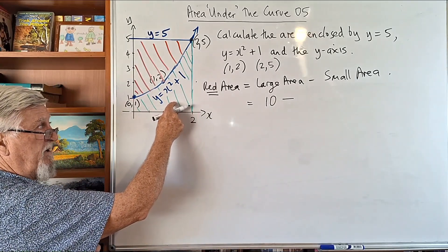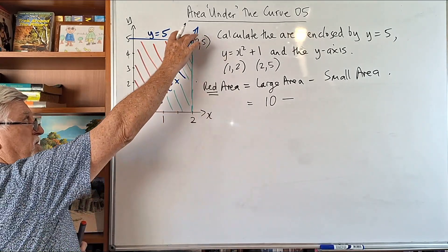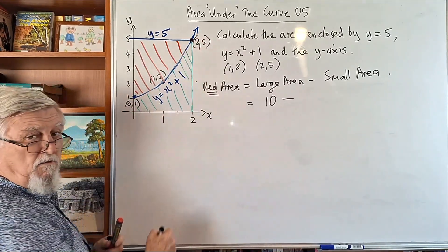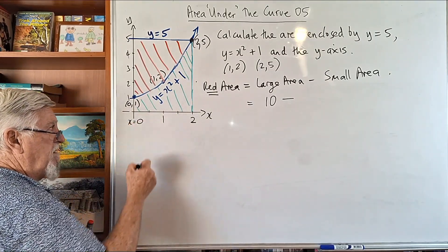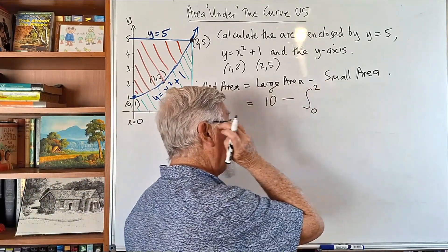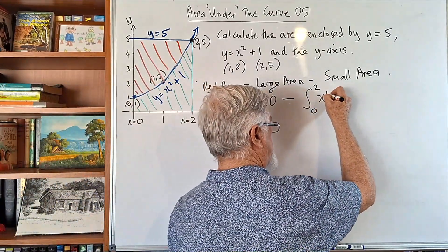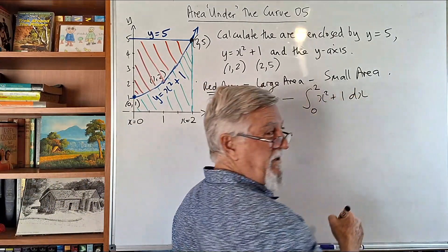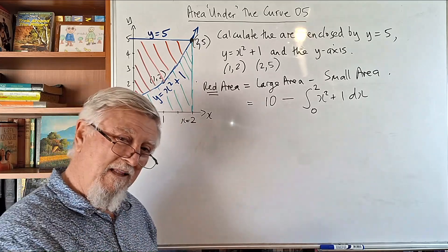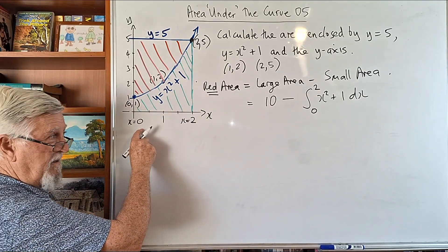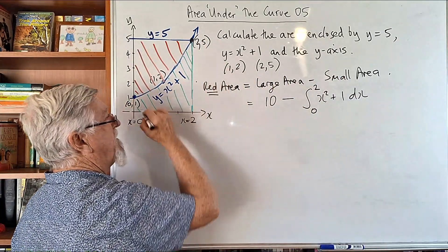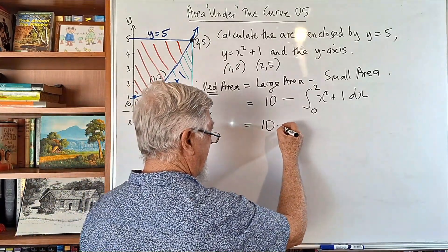The area under the curve means between the graph and the x-axis vertically. We know the curve intersects y equals 5 at (2, 5), so we integrate from x equals 0 to x equals 2. The integral starts at 0 and goes to 2. The equation of the graph is x squared plus 1, which makes this a fairly straightforward calculation. So that's the big rectangle minus the small green area, which gives us the red area.